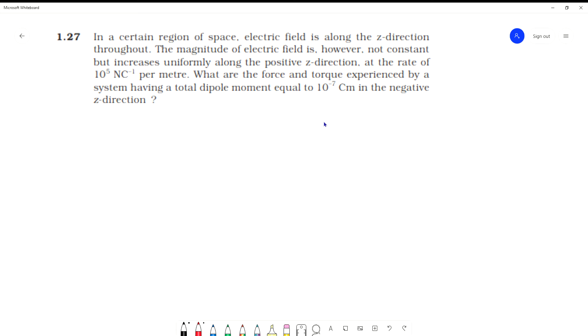Hello, this is question number 1.27 of NCERT exercise. The question is: in a certain region of space, electric field is along the z-axis throughout. The magnitude of electric field is, however, not constant.